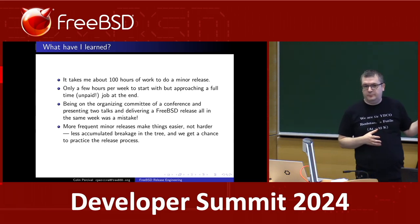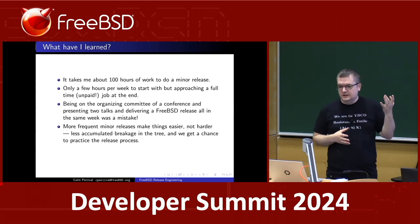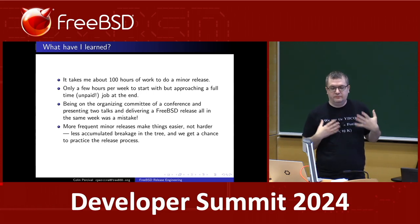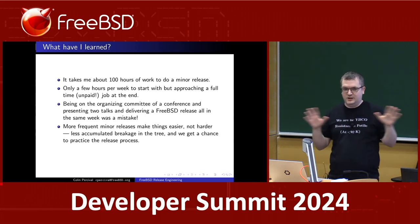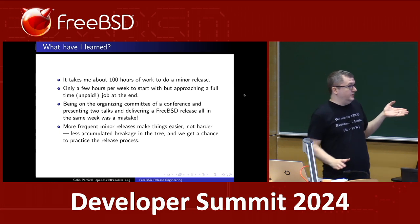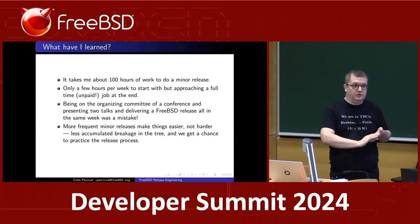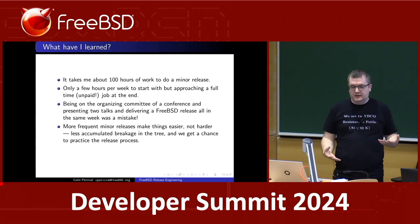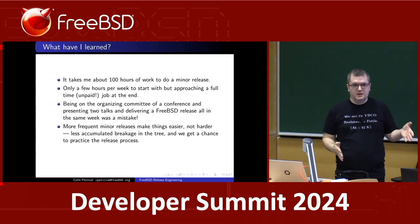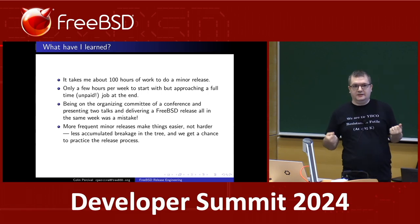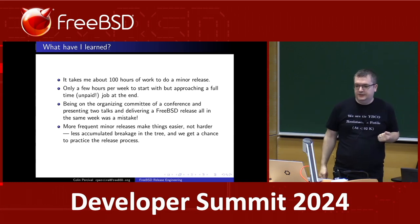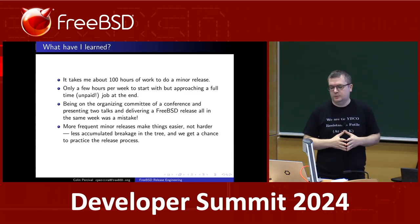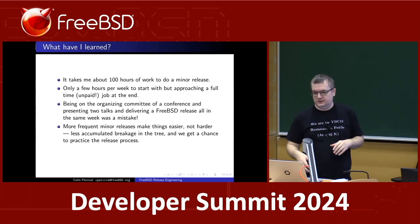I do not want to make the mistake of being on the organizing committee with the conference and agreeing to do two talks and delivering a FreeBSD release all in the same week — that is too much. I think more frequent minor releases will make things easier, not harder. When we were doing a minor release every nine or twelve months, there would be more stuff accumulated in the tree that was broken, and people were more desperate to get their code in, committing things that weren't as ready because they said 'I really need to get it in because I don't want to wait another year.' So hopefully more frequent minor releases will make everything easier for release engineering as well as the rest of the community.